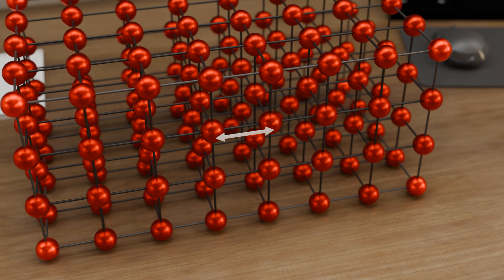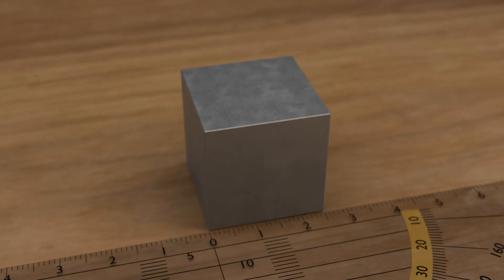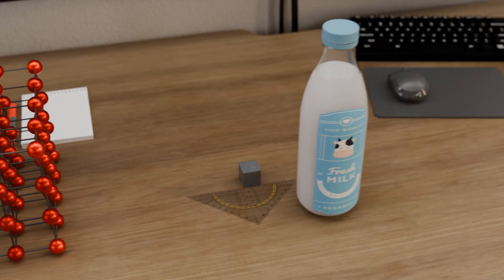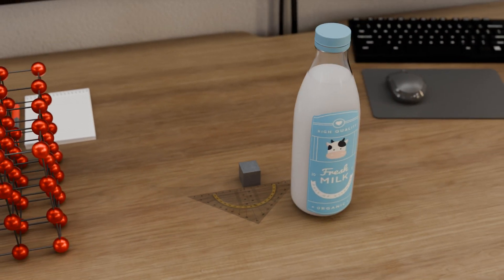The lattice constant is in the order of 250 to 500 picometers. A solid iron cube with an edge length of 25 millimeters contains about a quadrillion atoms. This is roughly equivalent to the number of one-liter milk bottles it would take to fill the entire volume of the earth with milk.